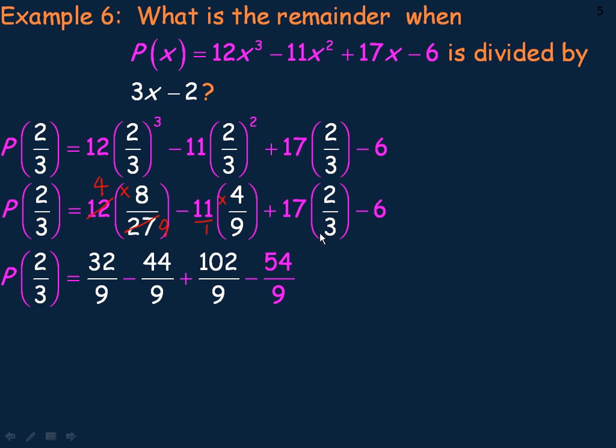The 17 times 2 thirds, I'm going to get a common denominator of 9. So what I would do is multiply that by 3, top and bottom. So that's where the 9 comes from here. 3 times 17 is 51, times 2 is where the 102 comes from. So we have 102 over 9. The negative 6 in the end has a denominator of 1, so I multiply it by 9 over 9. That's where the negative 54 over 9 comes from.